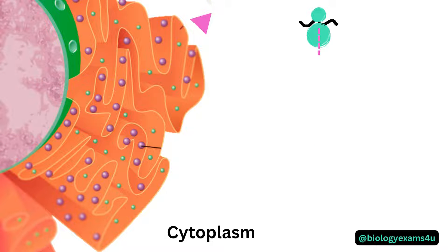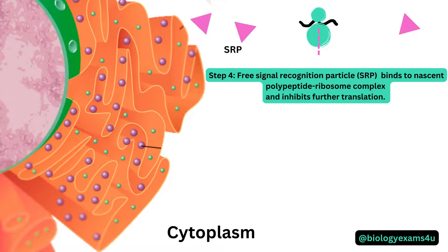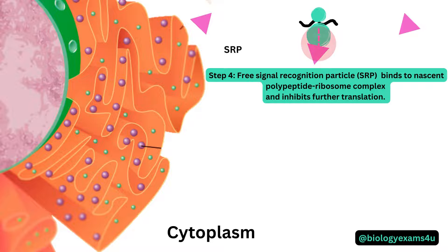In step three, there are many free signal recognition particles present in the cytoplasm. The SRP recognizes and binds to the nascent polypeptide–ribosome complex, and upon binding it inhibits further translation, so protein synthesis is stopped.